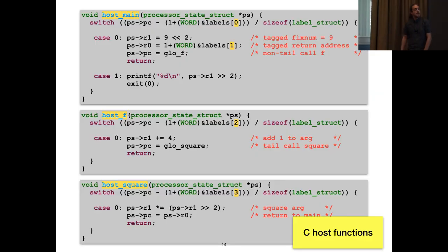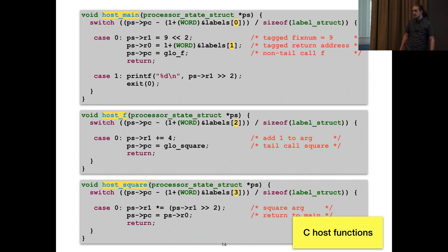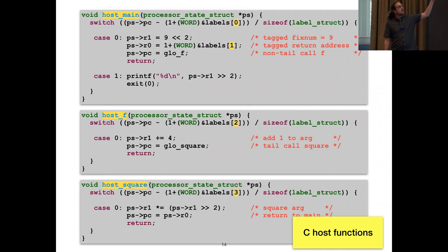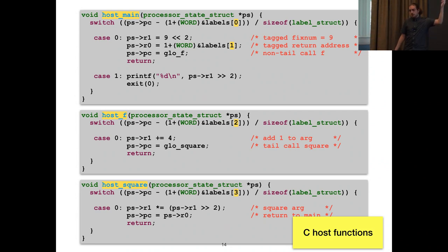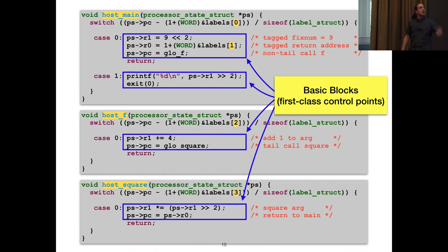Here are the host functions of the main, f, and square functions. The C code isn't really important, but what you should see is that they all have switches. The job of the host function is to dispatch and control the execution, executing the correct control point using the program counter. This is part of the trampoline. Each case of the switch is a basic block or control point.